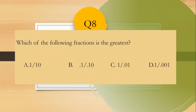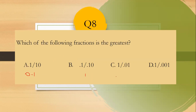Question number eight: Which of the following is the greatest? You divide to compare: 1 over 10 equals 0.1; 0.1 divided by 0.10 equals 1; 1 divided by 0.01 equals 100; and 1 divided by 0.001 equals 1,000. The greatest value is 1,000.